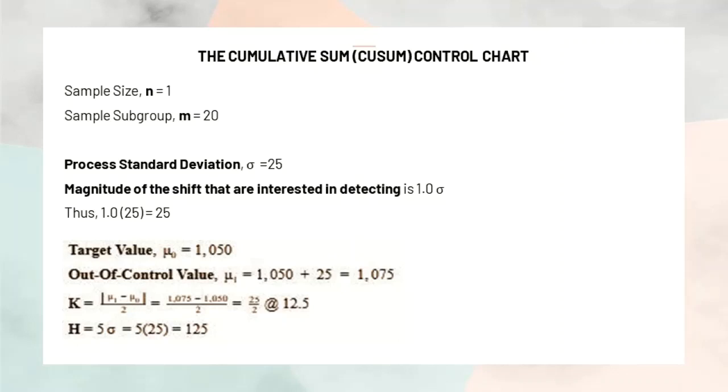The data given have one sample size and 20 sample subgroups. With the given process standard deviation which is 25, magnitude of the shift that are interested in detecting one sigma can be calculated which equals 25.